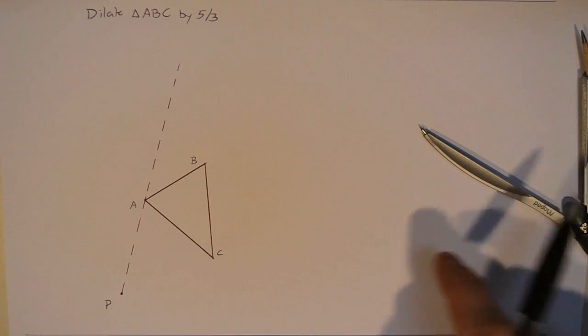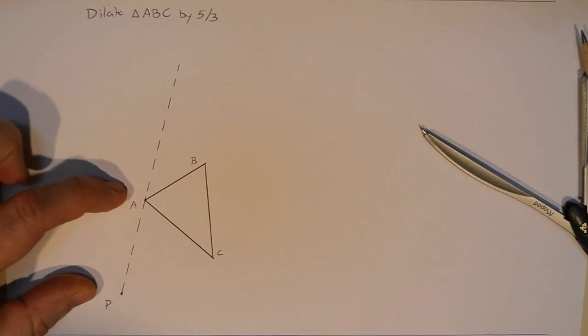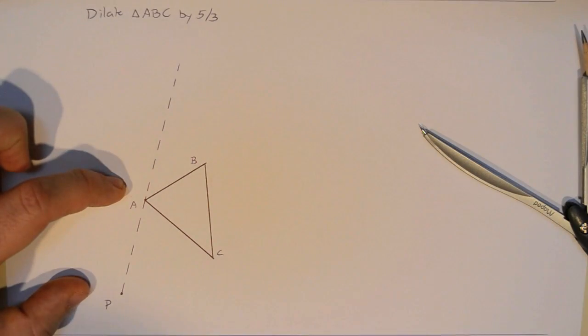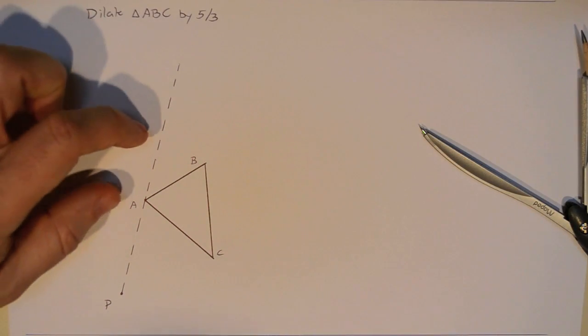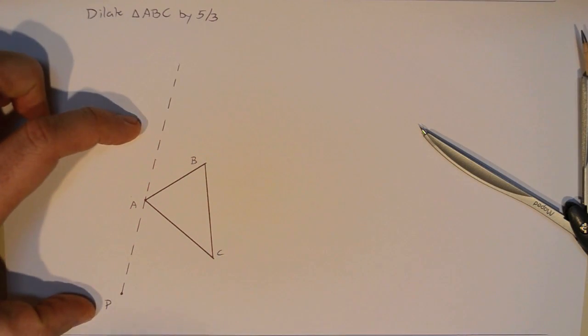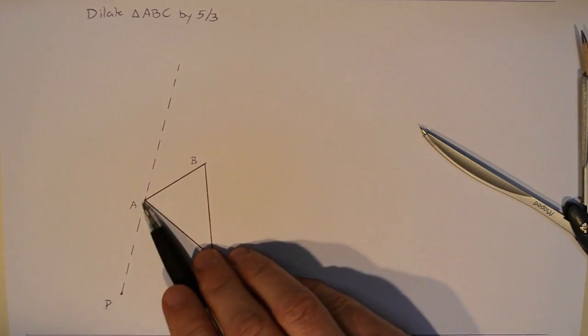So how do I figure out where A prime is going to be? Well, here's where dividing a segment into a ratio is going to come in real handy. See, essentially what I need to do is consider the distance from P to A as a whole unit, right? So three-thirds, in our case, since I'm working in thirds. And all I need to do is figure out how far away from A is two-thirds, or five-thirds from P. So I need to begin by dividing this piece into thirds.